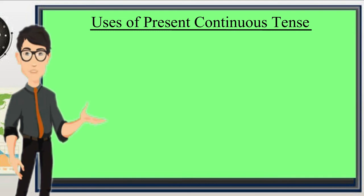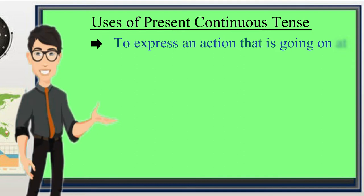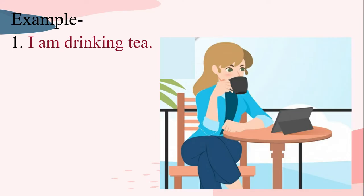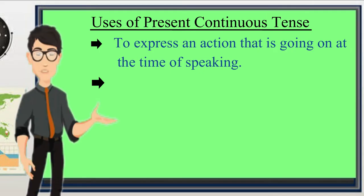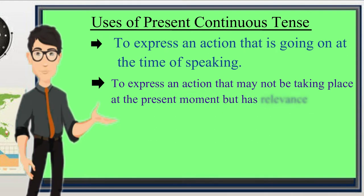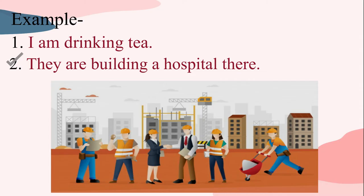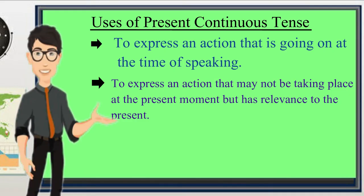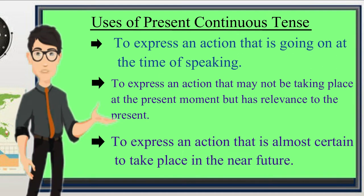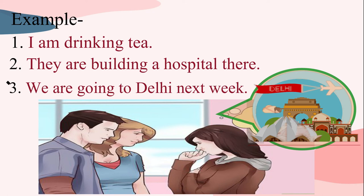Now, let us see where the present continuous tense is used. It is used to describe an action that is going on at the time of speaking — for example, I am drinking tea. It is also used to describe an action that is not necessarily taking place at the time of speaking but which has relevance to the present — for example, they are building a hospital there. Present continuous tense is also used to show an action that is almost certain to take place in the near future — for example, we are going to Delhi next week.